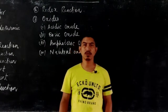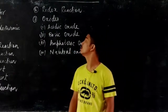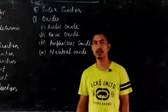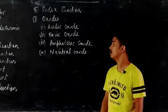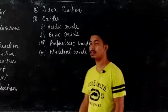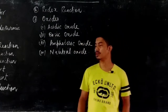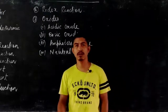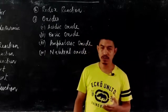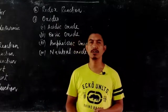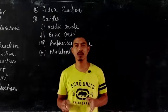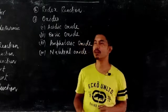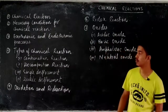Hello dear students, welcome to your online class. Today we will be going through Chapter 6, Chemical Reactions, from the chemistry textbook. We have already learned about it in Class 6 and Class 7. In our day-to-day life we see many kinds of changes — some are permanent and some are temporary. Changes which are permanent, irreversible, and in which two compounds or elements combine to form a completely new substance are known as chemical reactions.